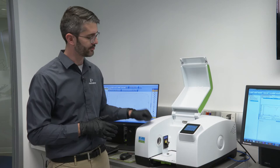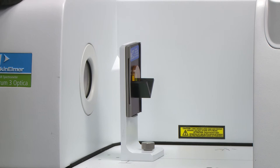So with the Spectrum 3 Optica, the light comes from the interferometer to a mirror up front and is diverted towards the sample surface here in the sample compartment of the instrument.